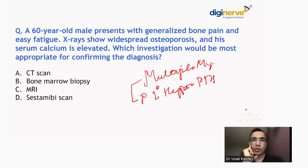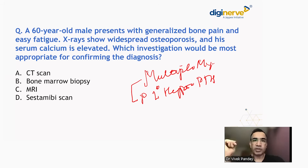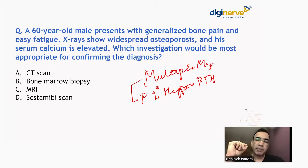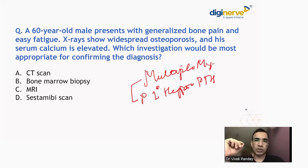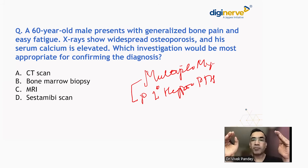Which one seems most appropriate? Both conditions lead to generalized bone pain, especially multiple myeloma where bone pain is very characteristic. Fatigue goes more in favor of multiple myeloma, because if it were primary hyperparathyroidism, the clues should have been bones, moans, groans, and stones. Here we have bone pain, which is seen in hyperparathyroidism, but it is more commonly generalized in multiple myeloma.